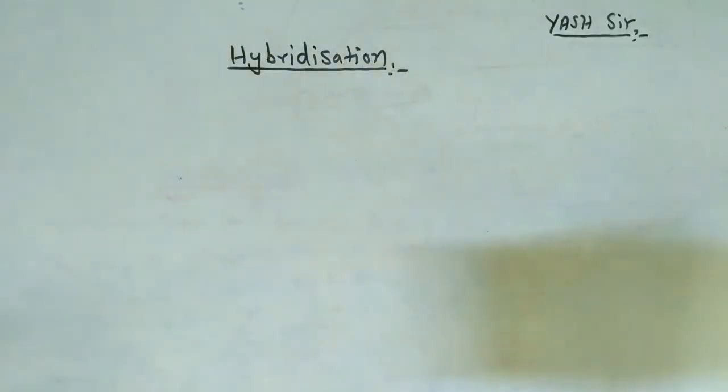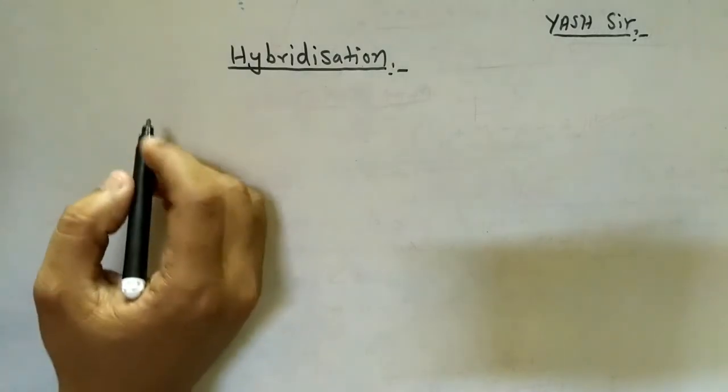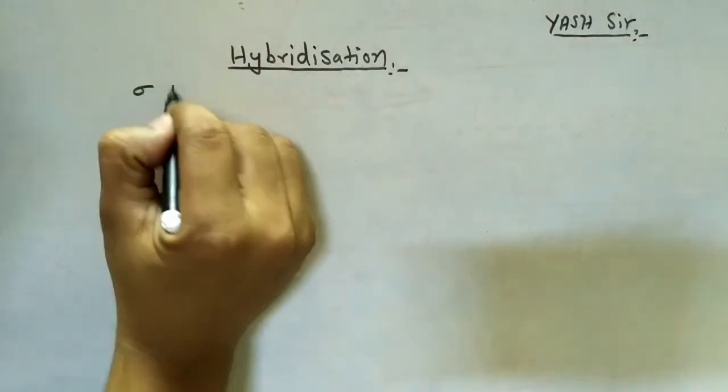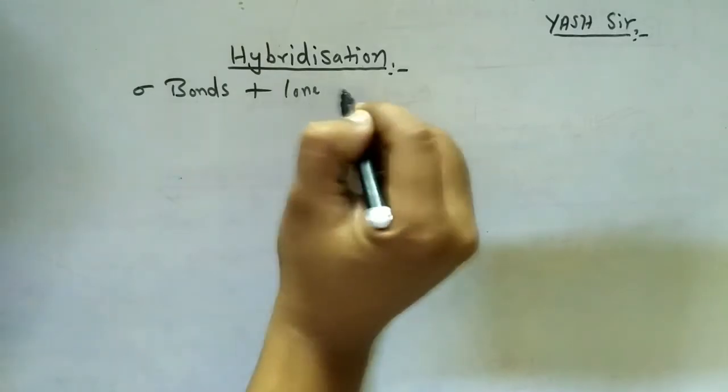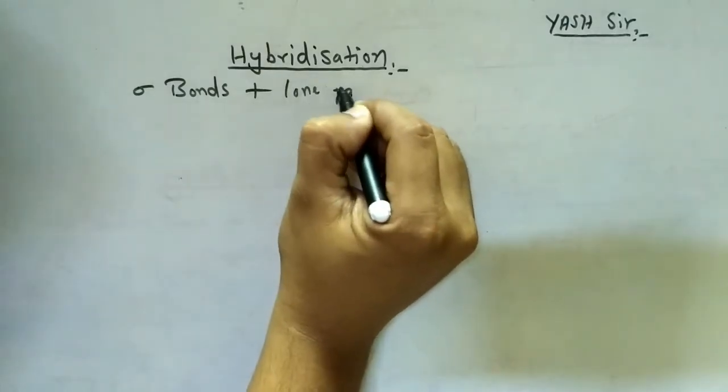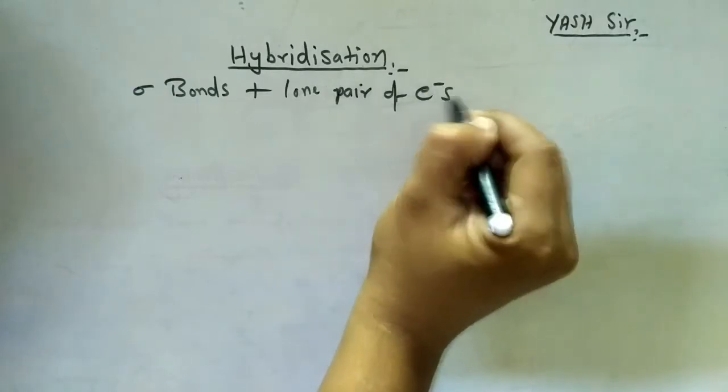That was for radicals. Now this one is for neutral species. Simply, you have to count the total number of sigma bonds plus lone pairs of electrons.